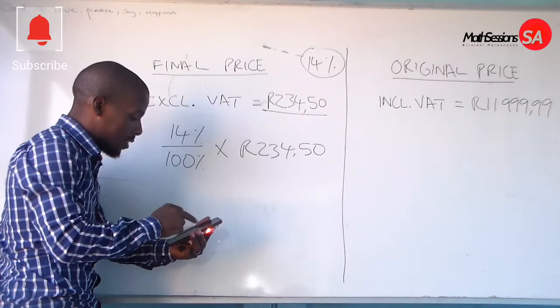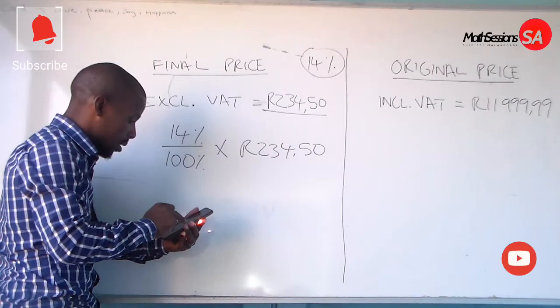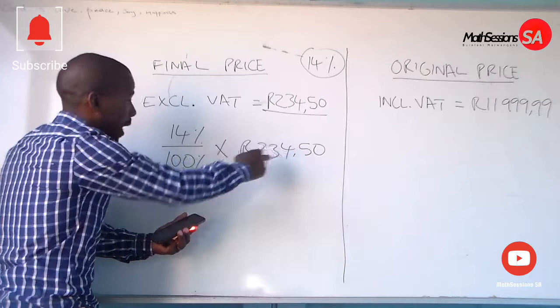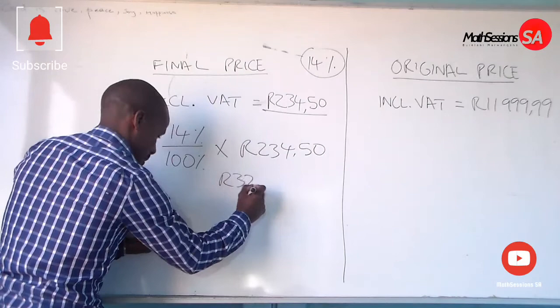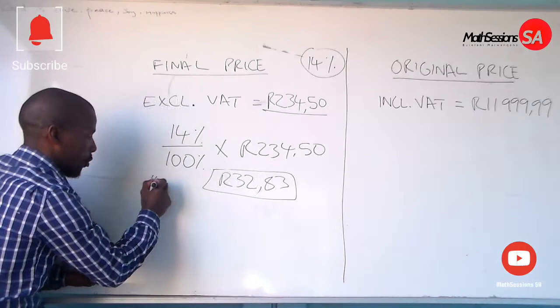On our calculator, 14 over 100 is 0.14. We multiply 0.14 by R234.50, which gives us R32.83. So R32.83 becomes the 14% VAT that has been excluded.